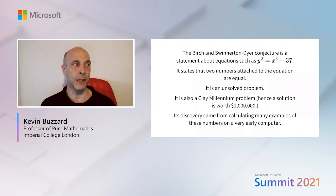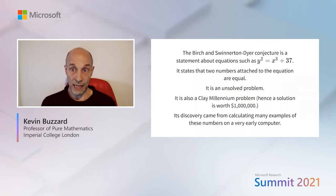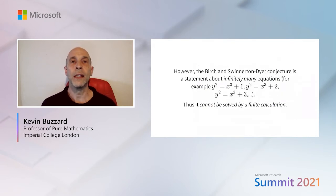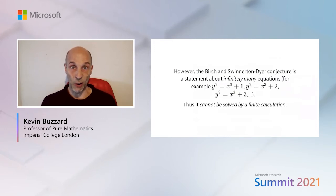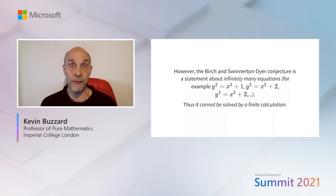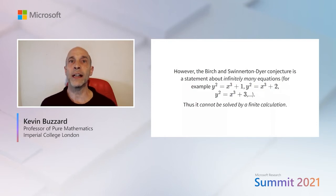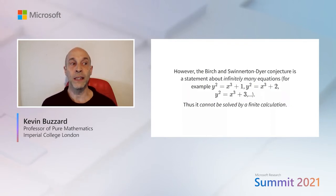So why aren't we solving the Birch and Swinnerton-Dyer conjecture using computers? Ironically, the conjecture was discovered by computer experimentation with very early computers. But here's the reason: the conjecture is a statement about all cubic equations in two variables — a statement about infinitely many equations. Numbers are infinite, and thus the conjecture cannot be solved by a finite calculation. You can check it for a million, or even a trillion cubic equations, but there are infinitely many. So in some sense, you've gotten nowhere.